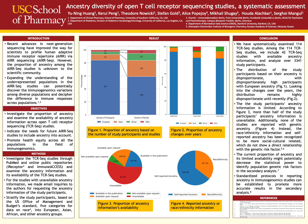Recent advances in next generation sequencing tools have provided modern scientists and bioinformaticians with effective bioinformatics software and tools to profile human adaptive immune receptor repertoires. However, no studies have estimated the proportion of ancestry in the field of adaptive immune receptor repertoire studies. It is known that the ancestry distribution in genome-wide association studies is disproportionate, mostly conducted under European ancestry.